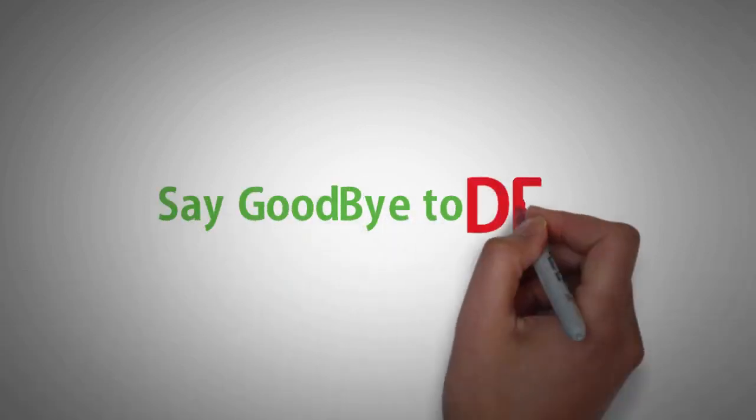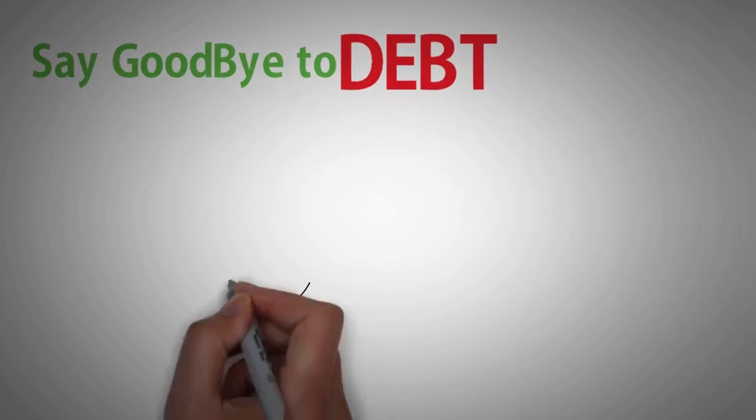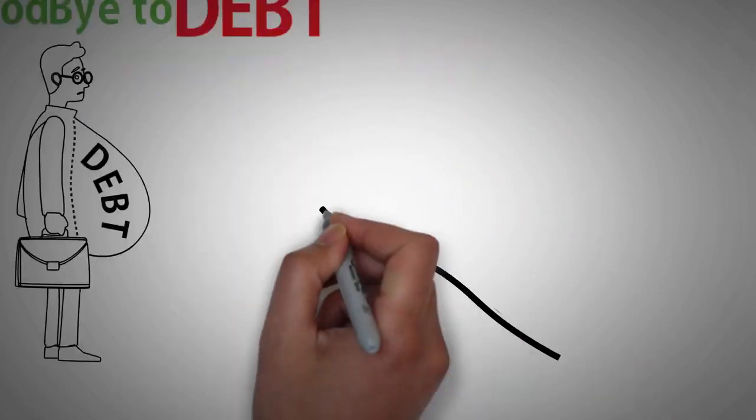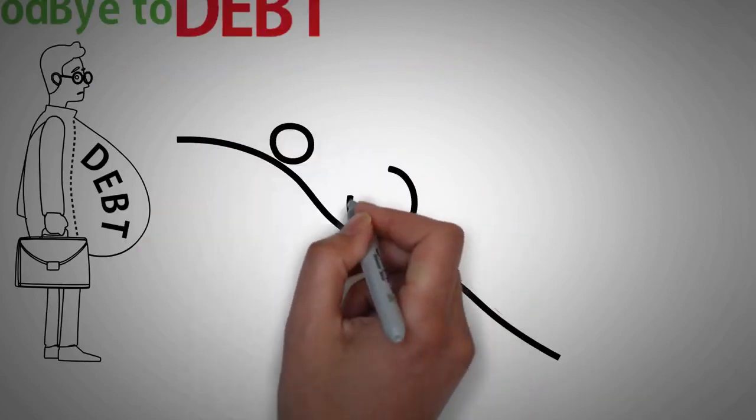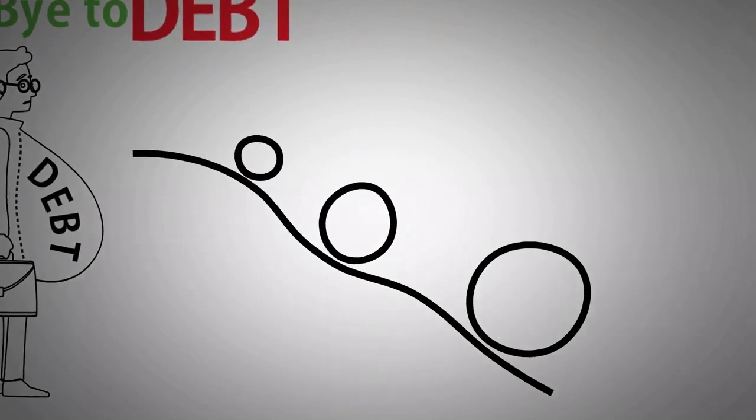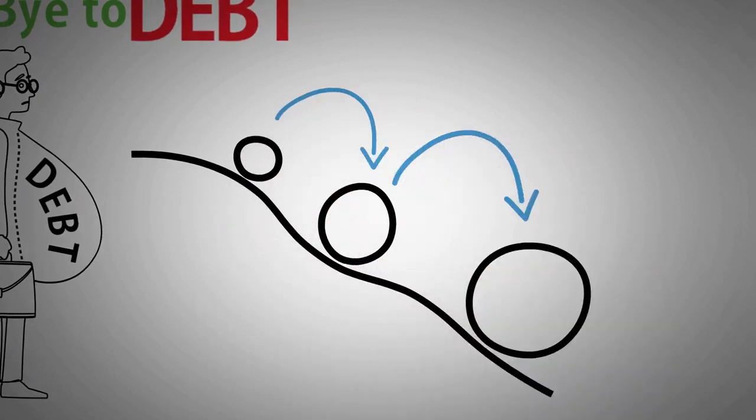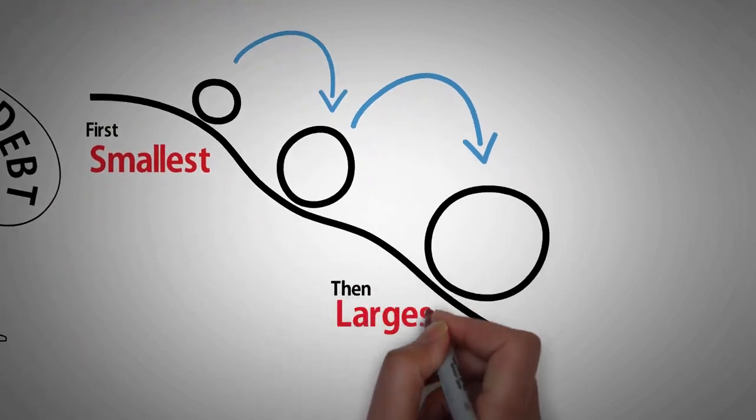Say goodbye to debt. Monthly debt payments are the biggest obstacle to saving money. Debt robs you of your income, so it's about time you get rid of that debt. The fastest way to pay off debt is with the debt snowball method. This is where you pay off your debts in order from smallest to largest.